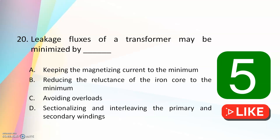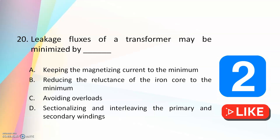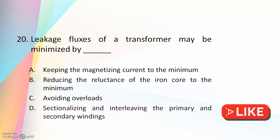Final question: leakage fluxes of a transformer may be minimized by — keeping the magnetizing current to minimum, reducing the reluctance of the iron core to minimum, avoiding overloads, or sectionalizing and interleaving the primary and secondary windings. The answer is sectionalizing and interleaving the primary and secondary windings. The primary and secondary windings are sectionalized and wound in interleaved structures.